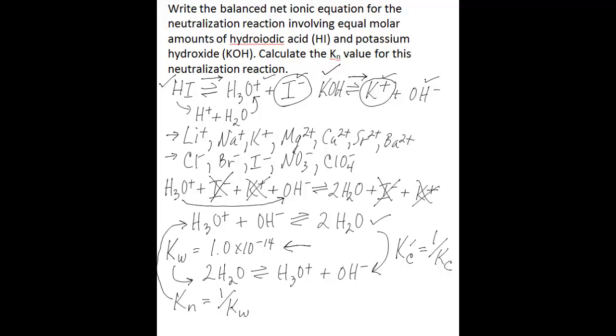So all we need to do here then to find the Kn for our net ionic equation, which is this one here, we'd take 1 and divide that by 1.0 times 10 to the negative 14th. And when you do the math, you're left with 1.0 times 10 to the 14th.